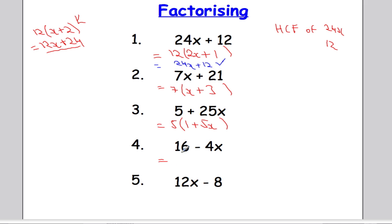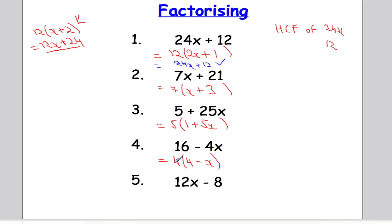Example number 4: the highest common factor of 16 and 4x must be 4. 4 is the biggest number I can divide into both. So 4 multiplied by 4 will give me the 16. Now, if it's a negative sign here, we're going to have a negative sign here. And 4 times x will give me that 4x. So 4 times 4 is 16 and 4 times minus x is minus 4x.